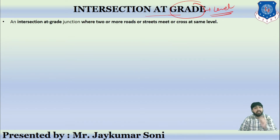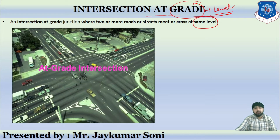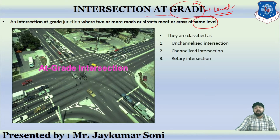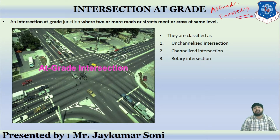An intersection at grade is a junction where two or more roads or streets meet at the same level. At-grade intersections are also classified into three categories: unchannelized intersection, channelized intersection, and rotary.